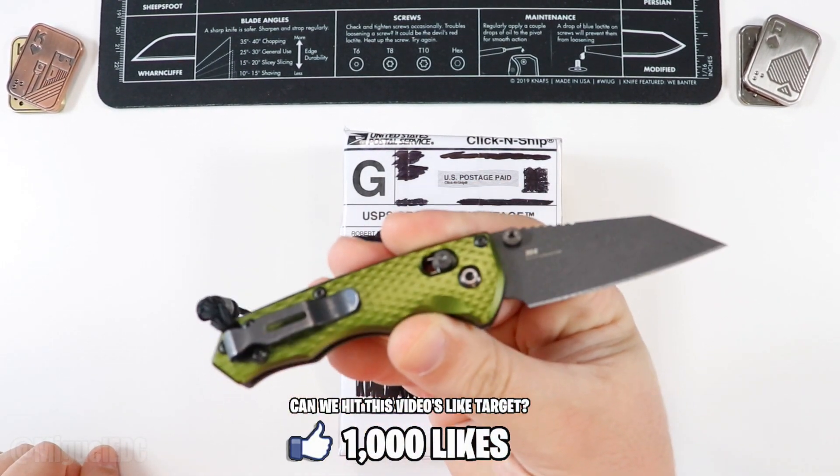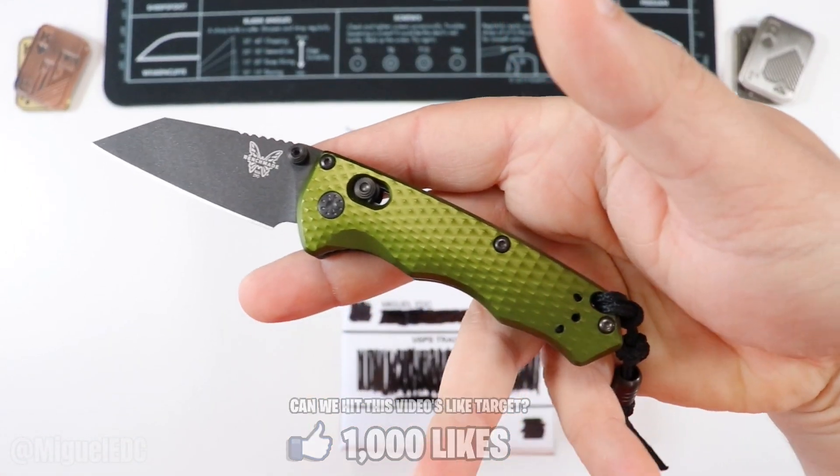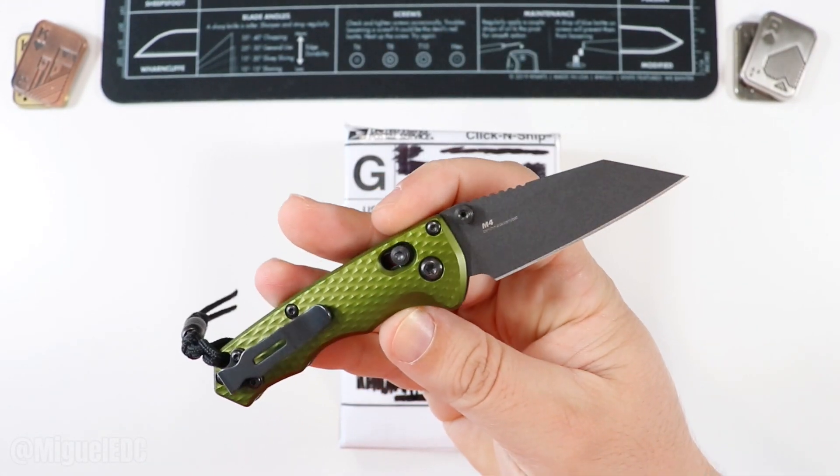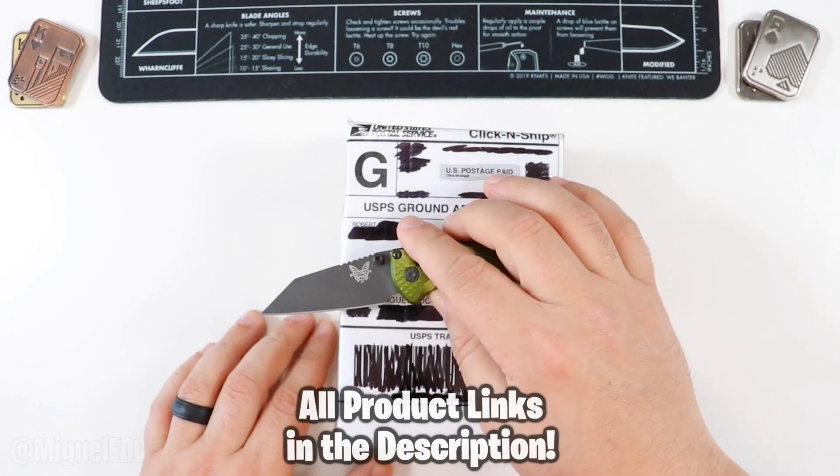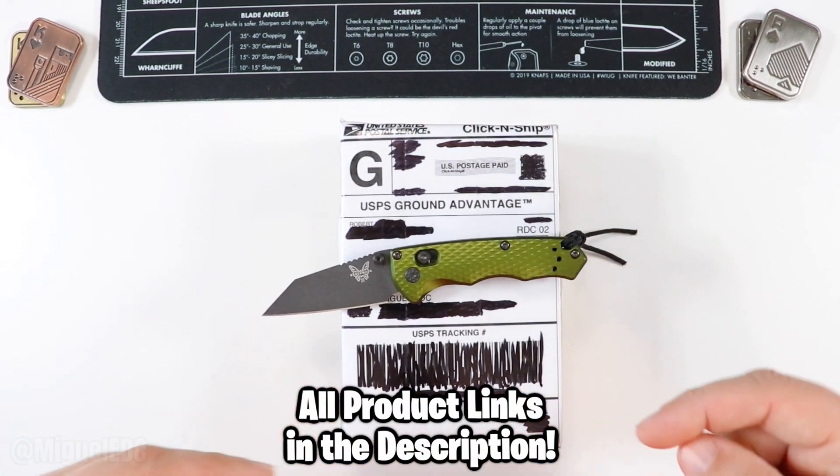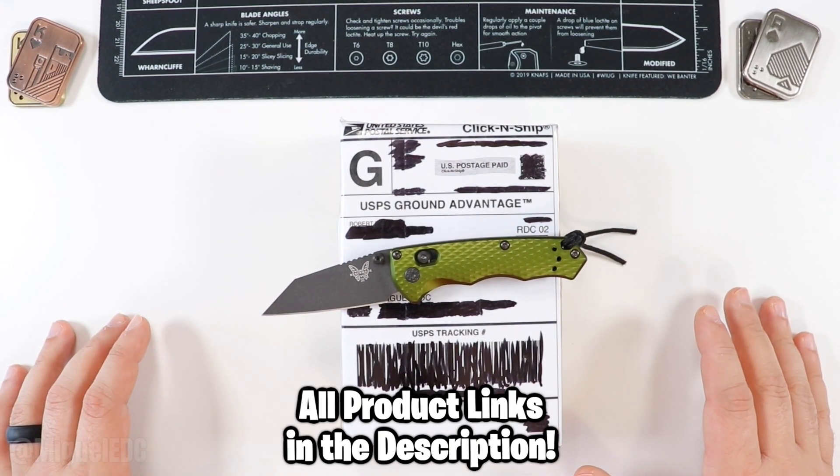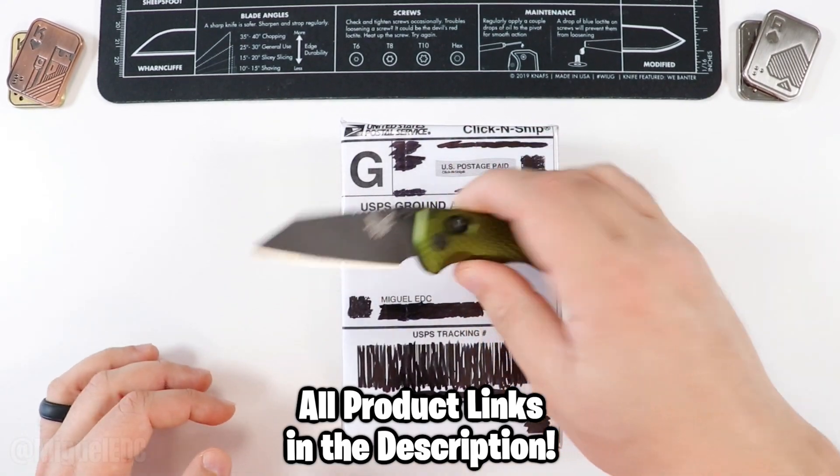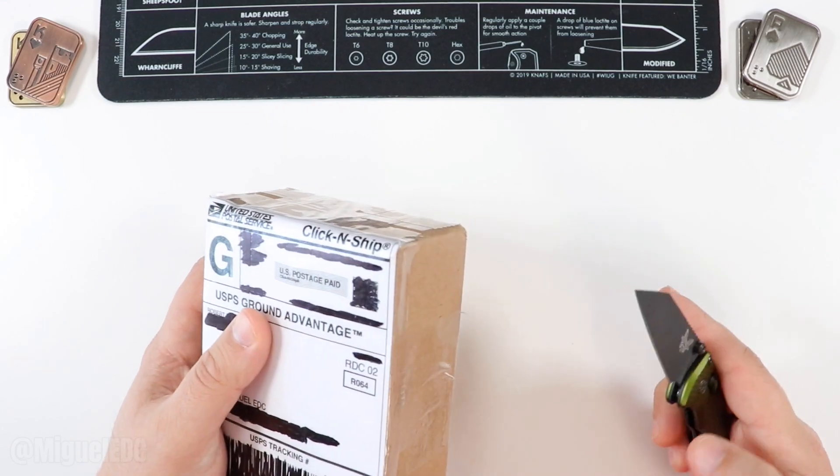Doing the honors today, we have the Benchmade Full Immunity. I just unboxed this knife here on the channel. It's a small factor EDC knife, M4 steel on that Warncliffe Sheepsfoot modified blade. This knife and any other knife that you see in this video will be linked down below so you can check more details. It does help out the channel if you do end up purchasing through those links, but that's entirely up to you and at no extra cost to you.